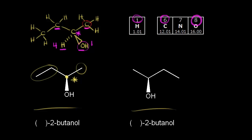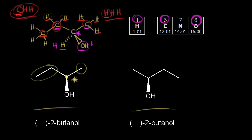To break the tie, we look at the atoms directly bonded to each of those carbons. The carbon on the right (methyl) is bonded to three hydrogens: H, H, H. The carbon on the left (ethyl) is bonded to a carbon, a hydrogen, and a hydrogen, listed in decreasing atomic number as C, H, H. Comparing the lists, the first point of difference is carbon versus hydrogen — carbon has a higher atomic number, so the ethyl group wins. The ethyl group gets priority number two, and the methyl group gets priority number three.